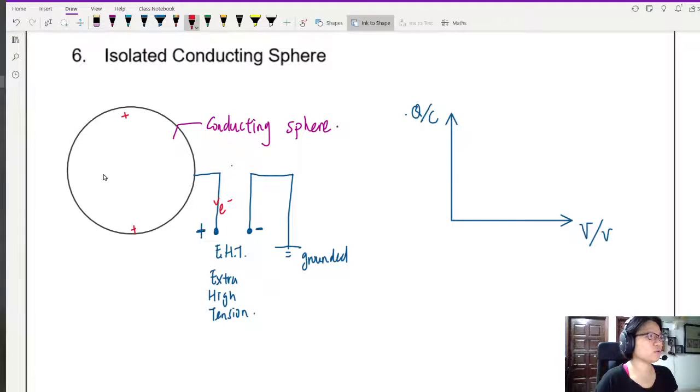As we all know, the charges tend to distribute themselves very evenly along the surface because they want to stay as far away from each other as possible. The charges will distribute evenly on the surface. And the larger the extra high tension, this value of V here, the larger it is, the more charge I can store.